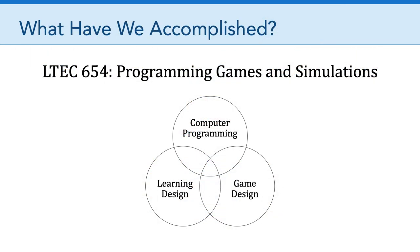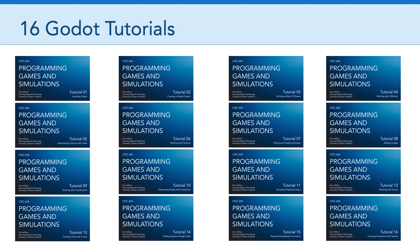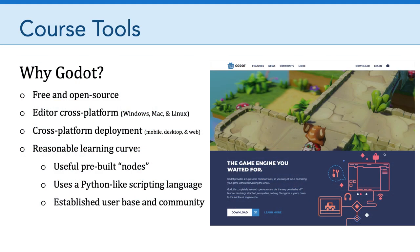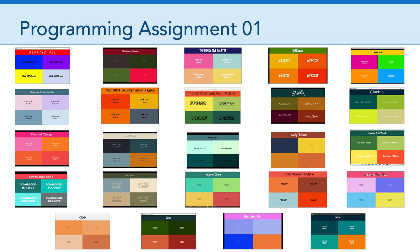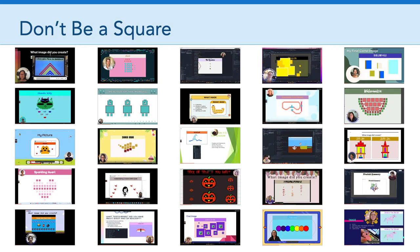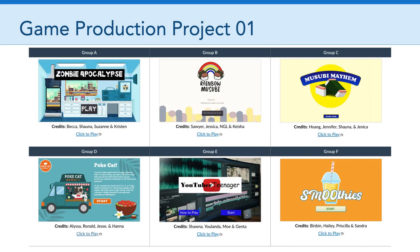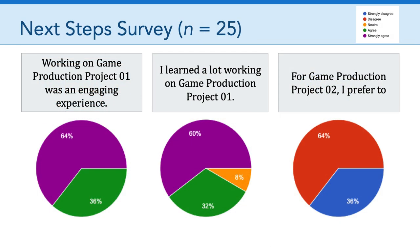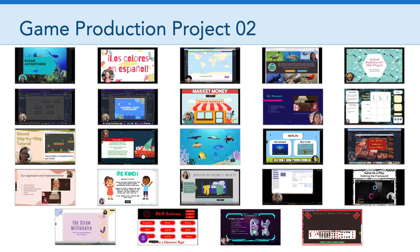On the computer programming side, we had 16 individual tutorials about Godot, the free and open-source cross-platform game development engine. We started with very basic programming assignments — manipulating nodes, adding text, working with fonts — and slowly built up to create things like Don't Be a Square. Ultimately, we came together in production teams to produce Game Production Project 1, our postmodern lemonade stands. Most of you agreed that was a valuable learning experience, and most recently we've been focusing on Game Production Project 2, with almost all of you working individually on projects of interest to you.